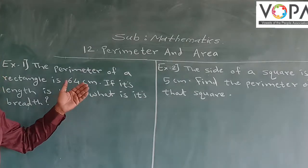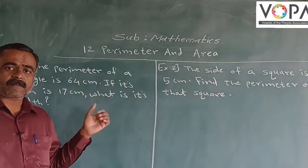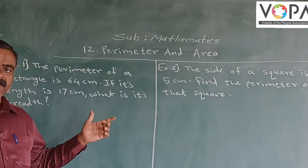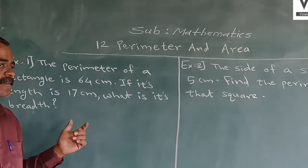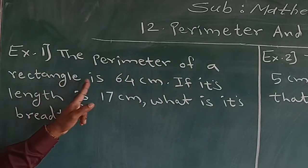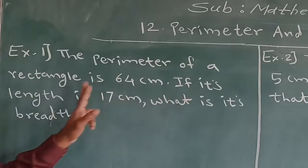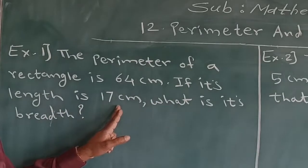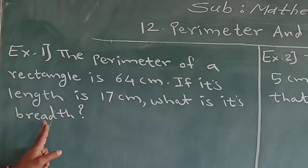Now, perimeter of a rectangle is 64 cm. If its length is 17 cm, what is its breadth?